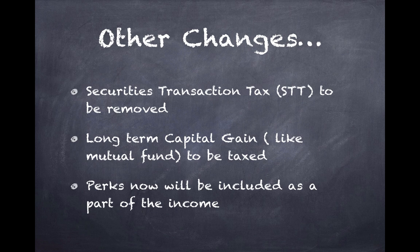Finally, perks will be removed as a separate category. People generally receive perks like Sodexo passes or leave travel allowance (LTA) over and above their salary, which are currently not taxed. This is where corruption starts — people submit fake bills if they haven't actually traveled, and use Sodexo passes and similar vehicles even though there is an administrative burden on companies. The new system is simpler: these perks will be considered part of income, no questions asked, removing the administrative cost and complexity for both employees and companies.